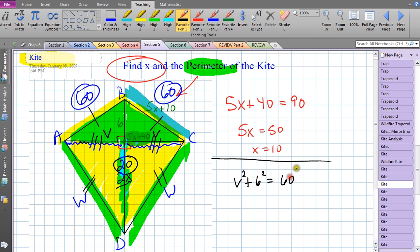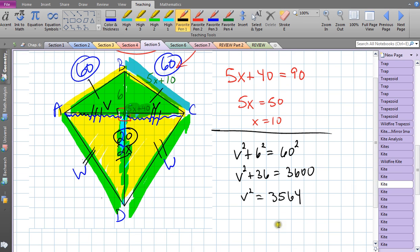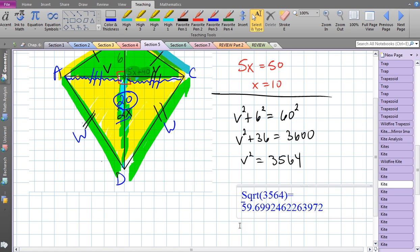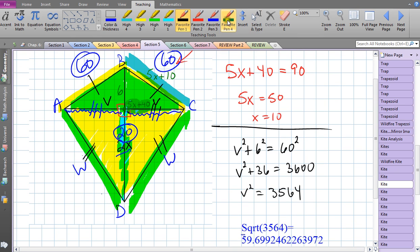I'm going to go v squared plus 6 squared equals 60 squared - notice I'm putting the 60 by itself, it's the hypotenuse. So v squared plus 36 equals 3600, and so v squared equals 3564. I need to take the square root of 3564. I'm going to try to do that right on my tablet.